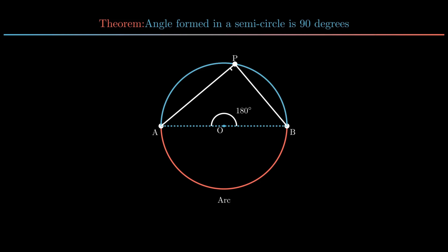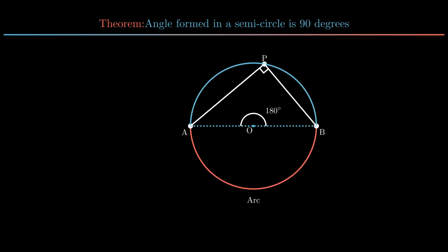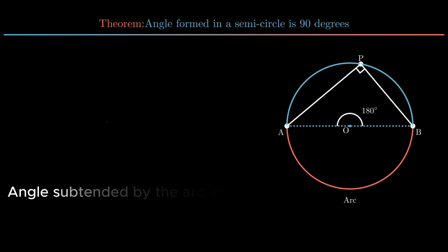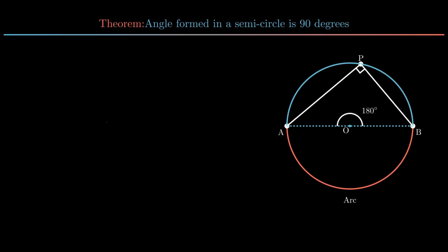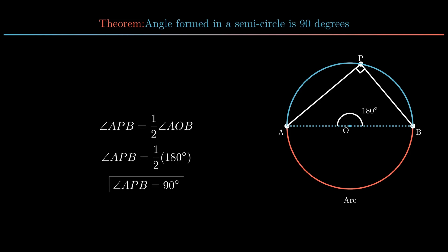Angle APB so formed will always be equal to 90 degrees. As the angle subtended by the arc at the center is double the angle subtended by the same arc at any point on the remaining part of the circle, angle APB is equal to half of 180 degrees. Hence the theorem is proved.